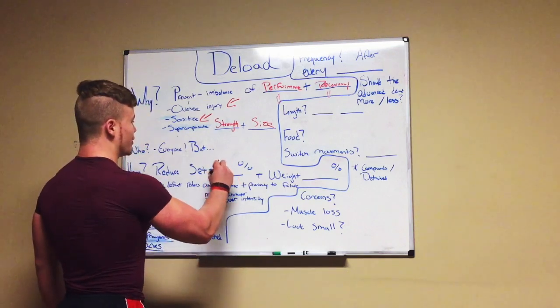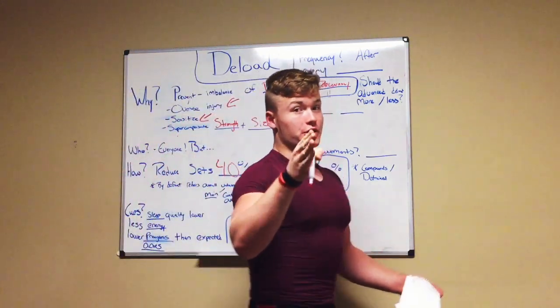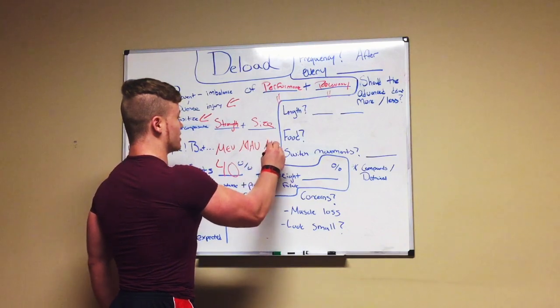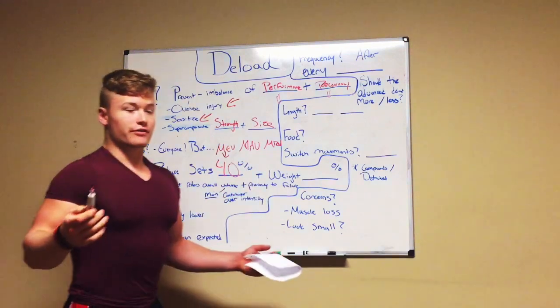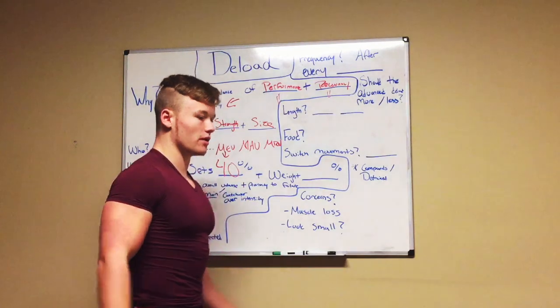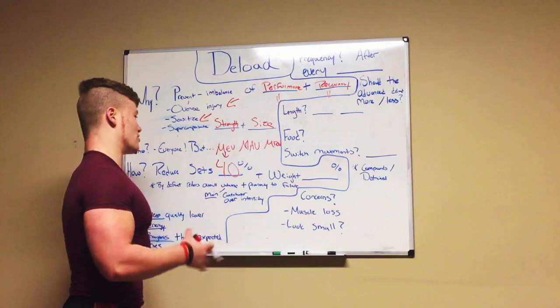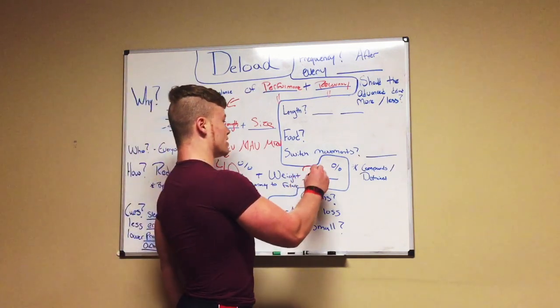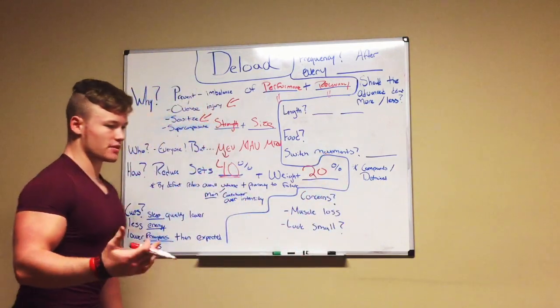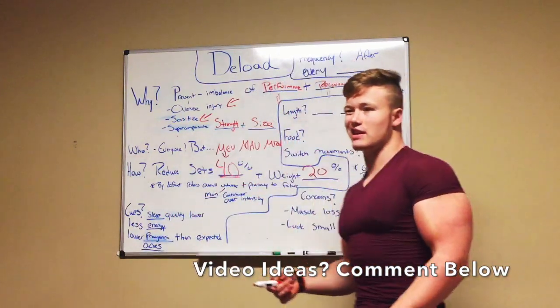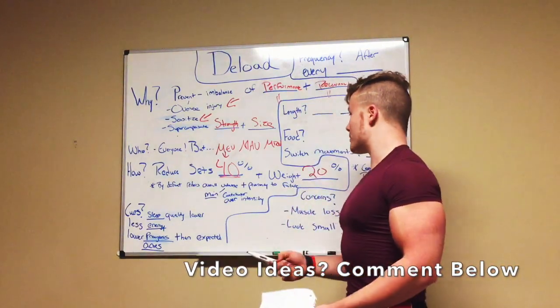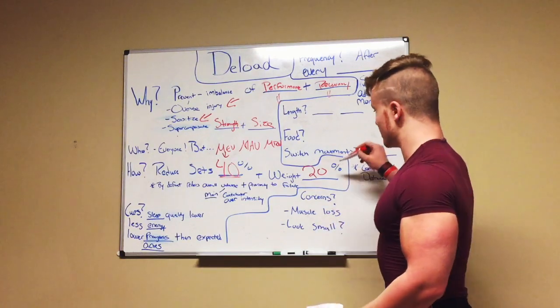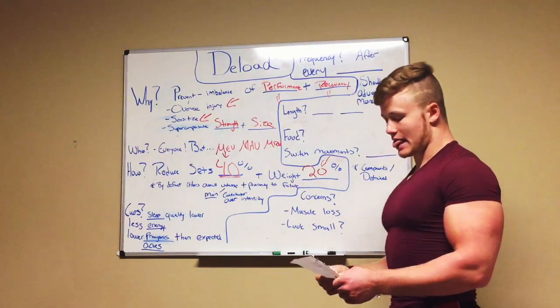You reduce your sets by 40%. So if you're doing 10 sets back, there's your minimal effective volume, your MAV and your MRV. You take 40% of your minimal. So if your minimal volumes for back were six sets, you'd go down to about four sets. It's not exact, but you want to go down to about 60% of your regular volumes, reduce it by 40%. And you're reducing your weights by 20%. If it's a bodyweight exercise, like pull-ups, I kind of just take off 20% of the reps. So if you're doing 10 reps with pull-ups, you might do eight.